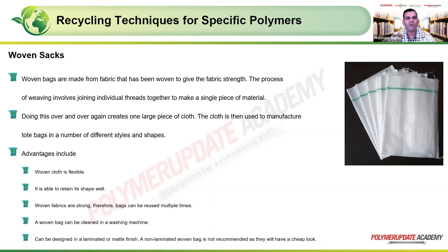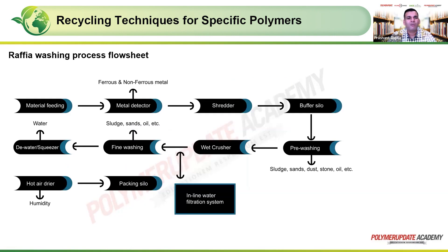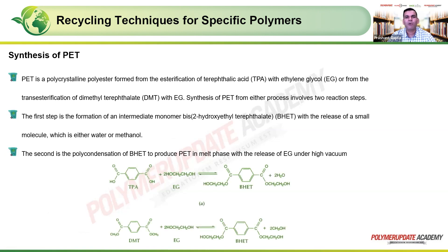Advantages of woven sacks include flexibility, ability to retain shape, strength allowing multiple reuses, and washability in a washing machine. They can be designed with a laminated or matte finish, though a long laminated woven bag is not recommended as it gives a cheap look. A raffia washing process flowsheet uses similar approaches depending on the type of waste.